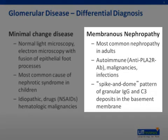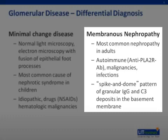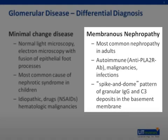Membranous nephropathy is the most common cause of nephrotic syndrome in adults. Recently, antibodies against antiphospholipase A2 receptors on podocytes have been described in the idiopathic form, which makes an autoimmune origin probable. Secondary forms are associated with malignancies and infections. Subepithelial immune complex deposits in the basement membrane cause the pathognomonic immunohistochemical appearance.